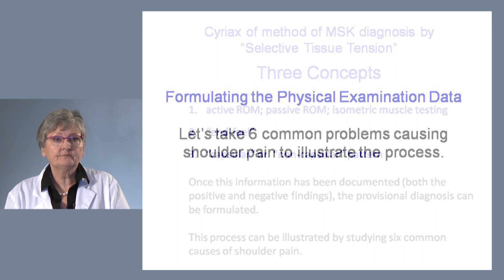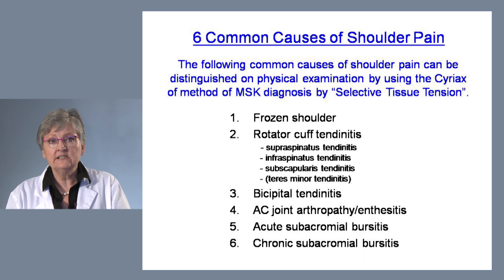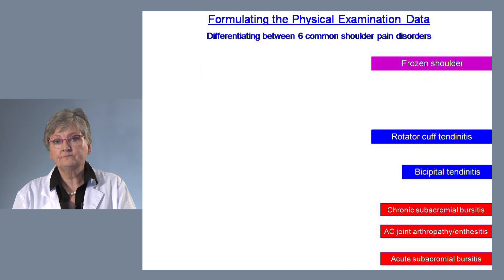This process can be illustrated by studying six common causes of shoulder pain. The six common causes selected are: frozen shoulder, rotator cuff tendinitis, bicipital tendinitis, acromioclavicular joint arthropathy or enthesitis, acute subacromial bursitis, and chronic subacromial bursitis.